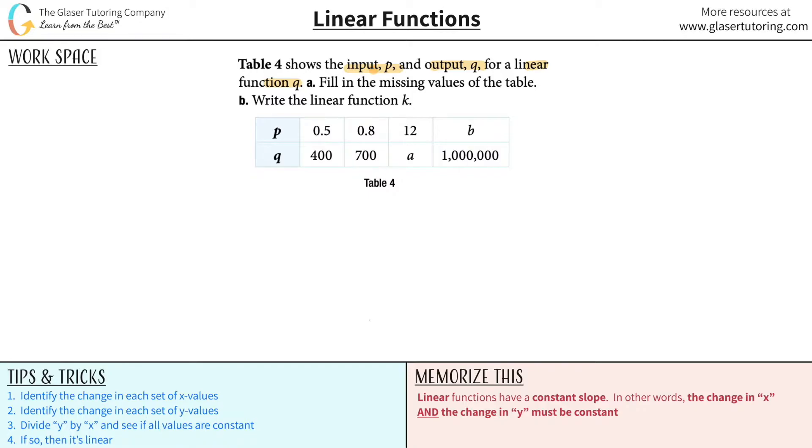So first thing is whenever I know that they're giving me an input and an output, what I like to do is I like to just rewrite the variables. It doesn't matter what you call them. Let's call this x and y. If they tell us the input is P, then I can call it an x. The output would be then a y. I like to do that because it's just easier to remind me of the linear functions formula y equals mx plus b.